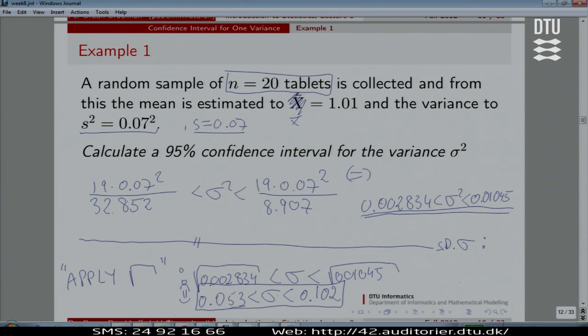And sometimes it will be for production companies like Lundbeck to prove to authorities, to FDA and others, that they produce with a low variability. Then maybe 20 tablets is far too little to achieve a good and nice and narrow confidence interval for the variance.